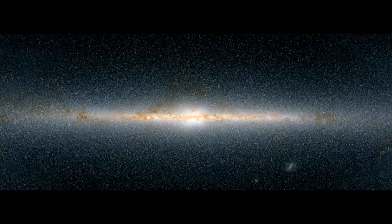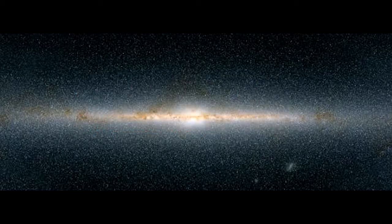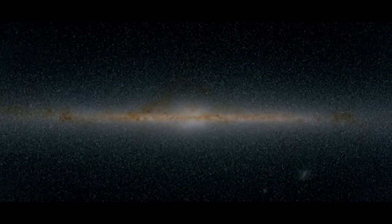If you have ever come across facts about the Milky Way, you must know that it's a spiral galaxy — a barred spiral galaxy, to be precise. In 1936, famous astronomer Edwin Hubble came up with the Hubble sequence, a morphological classification scheme to classify galaxies into three groups on the basis of their appearance: 1. Ellipticals, 2. Spirals, and 3. Lenticulars.